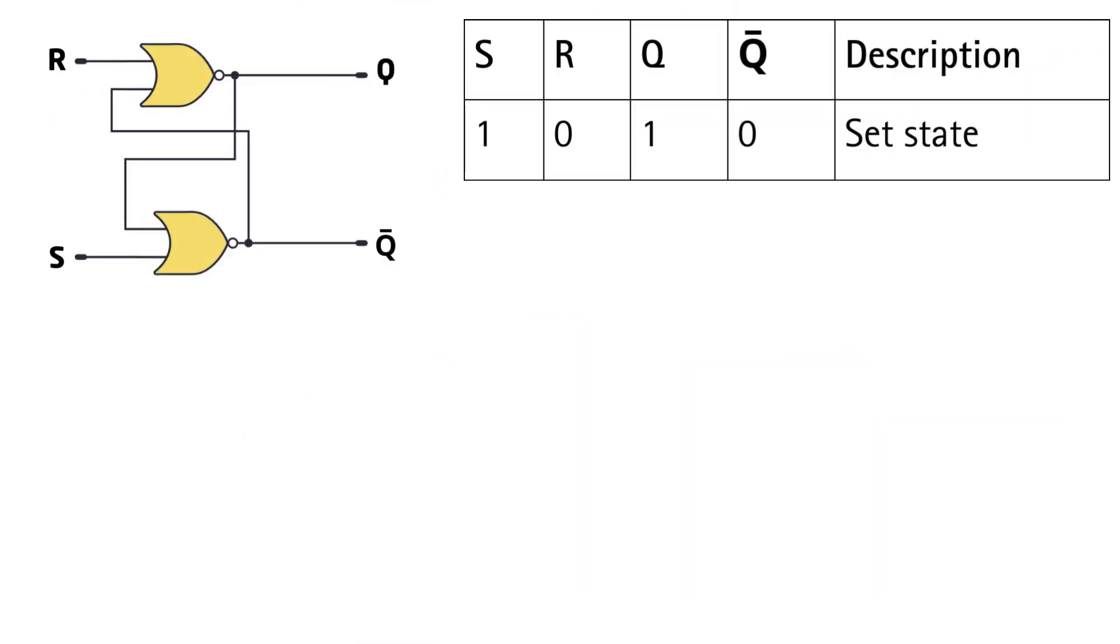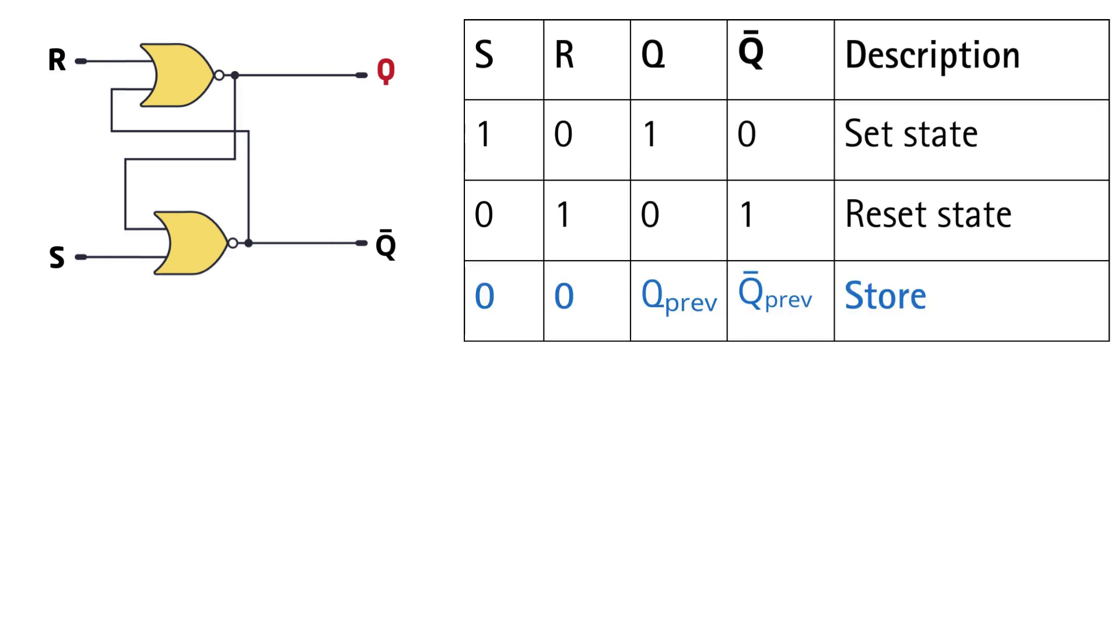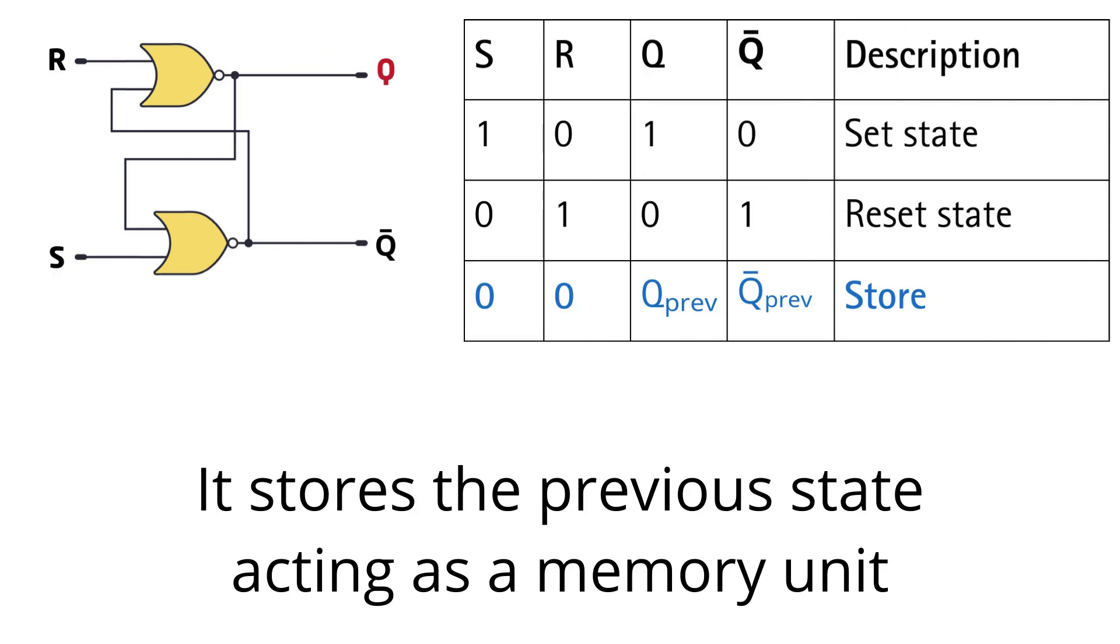When S equals 1 and R equals 0, the latch stores a 1 in Q and Q bar becomes 0. In this state, the latch is said to be in a set state. Now here's the interesting part. When both S and R equals 0, there is no change in the output. The latch keeps the last stored value, acting as a simple memory unit. So we've built a circuit that can hold a value, our first step toward memory.